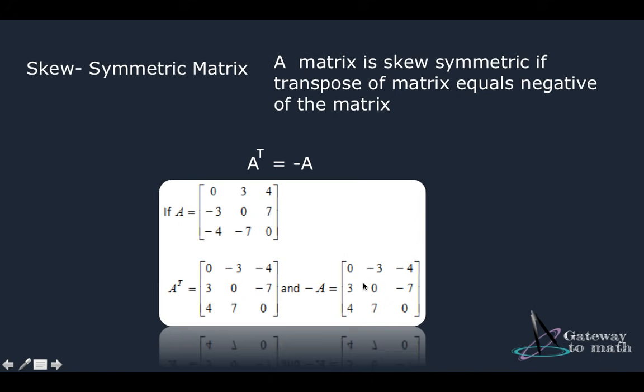Next comes skew symmetric matrix. A matrix is skew symmetric if the transpose equals the negative value of the original matrix. So I have a matrix A whose values are as under. The transpose will be again the reversal of rows with the column, so this is the transpose, which is equal to negative value of our original matrix A as you can see here.